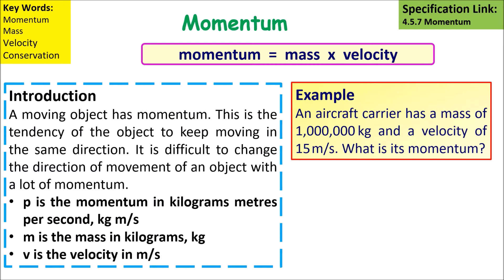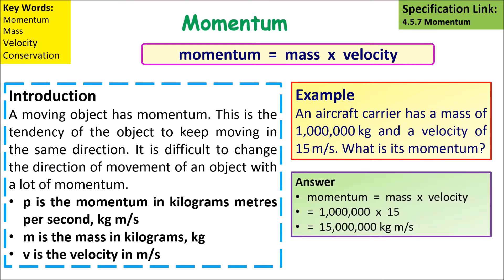If an aircraft carrier has a mass of a million kilograms and its velocity is 15 meters per second, to work out its momentum we do 15 times a million, which means its momentum would be 15 million kilogram meters per second.